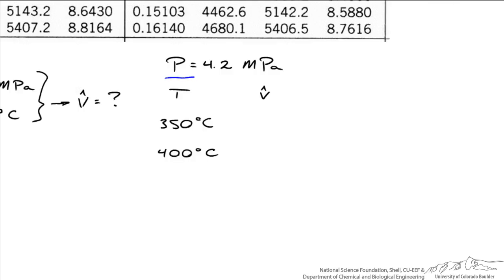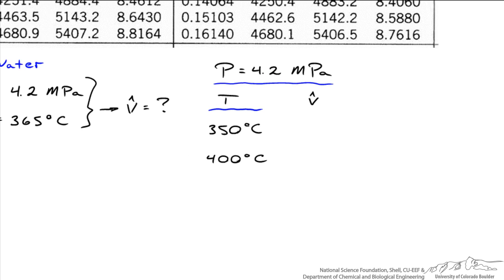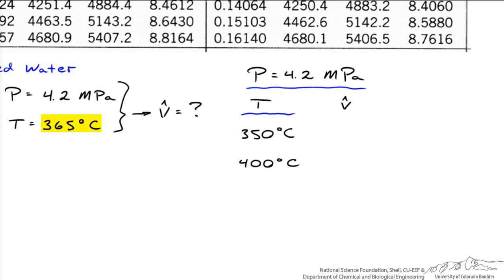So here's an example of what our table will look like. We're going to say a pressure at 4.2 MPa, and we're going to choose temperatures that bracket this temperature of 365 degrees C. So I chose temperatures of 350 and 400 degrees C, and what we'll have to do is two interpolations.